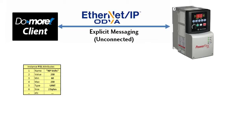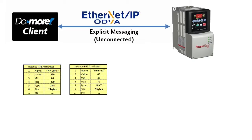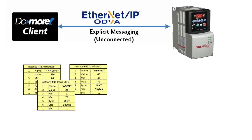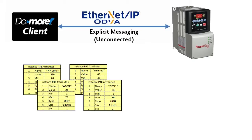Keep in mind these numbers are just examples — we'll look at real data in the next video. Here's parameter 32 — the motor nameplate frequency — using the exact same template, just filling in the blanks. Parameter 39 is the acceleration time, parameter 40 is deceleration — same thing. So we end up with a huge group of tables like this describing every parameter in a drive using this common attribute template, which we call an object.